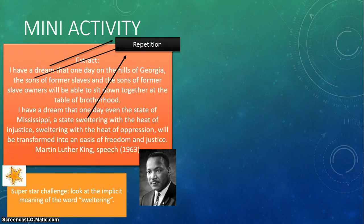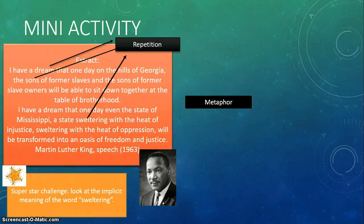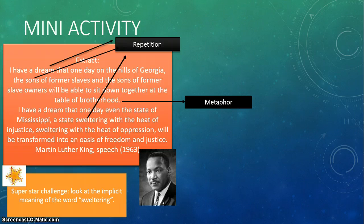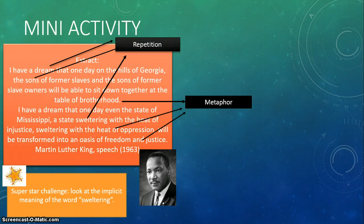Another thing that really stood out to me was the use of metaphors. 'Table of Brotherhood' — there's not literally a table of brotherhood, but it's going to be formed of brotherhood because all these people are going to sit at this table and feel like brothers, meaning being equal. I really like this metaphor. Another metaphor is 'heat of oppression' and 'oasis of freedom and justice.' I thought they were very powerful, and hopefully you got these as well.